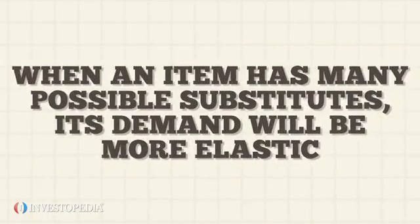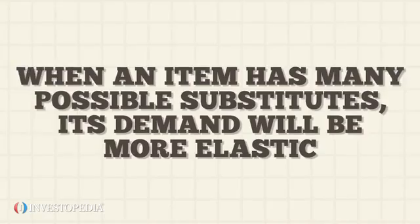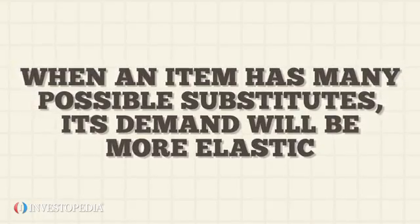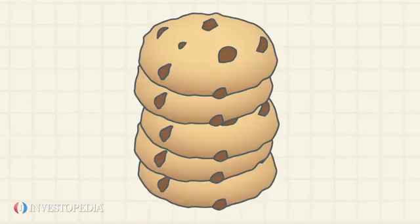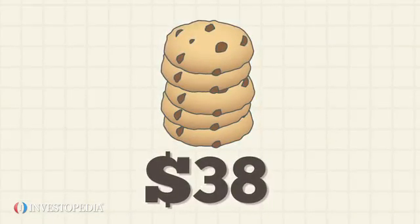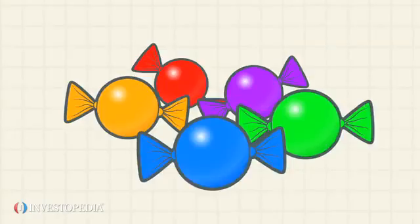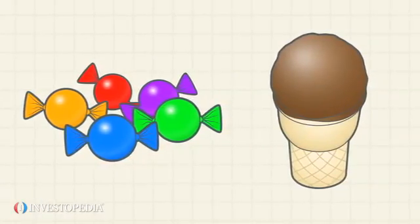When an item has many possible substitutes, its demand will be more elastic. For example, if the price of cookies increased dramatically, consumers could easily substitute candy or ice cream to satisfy their desire for sweets.